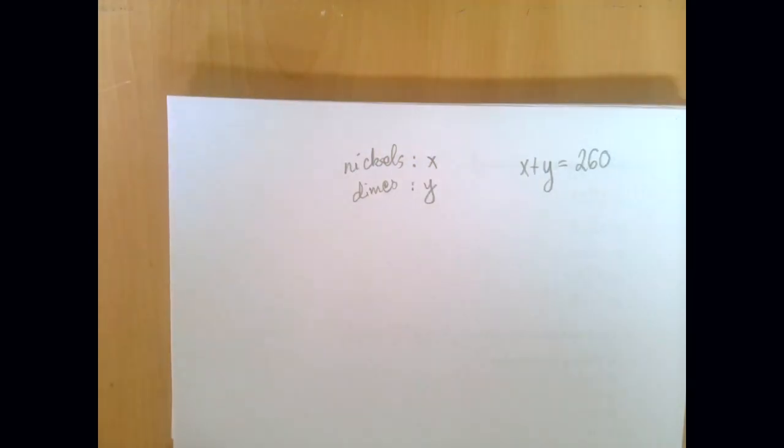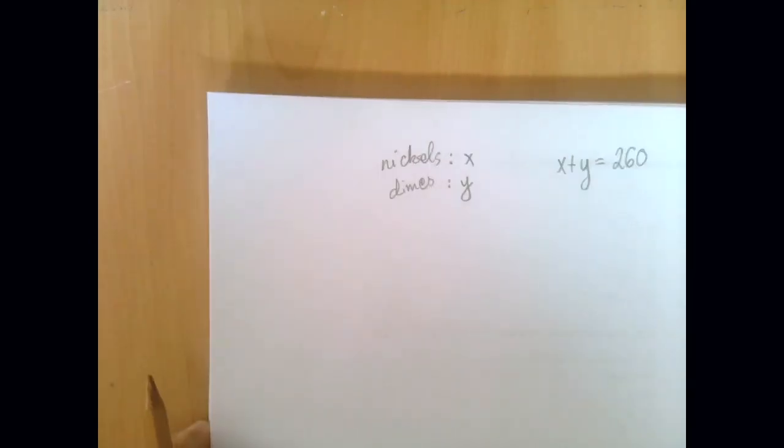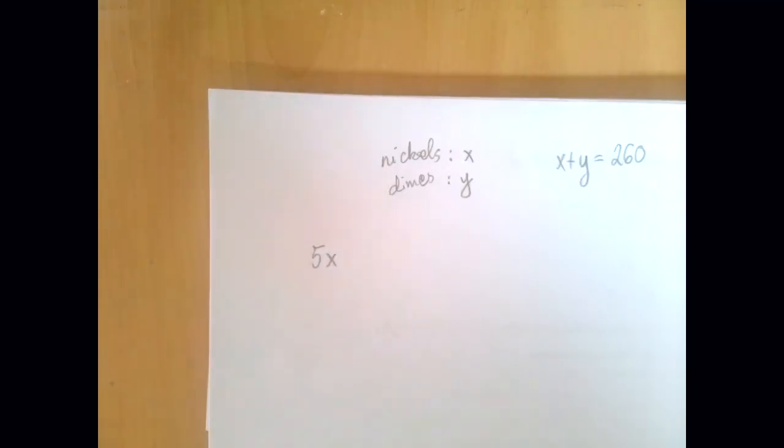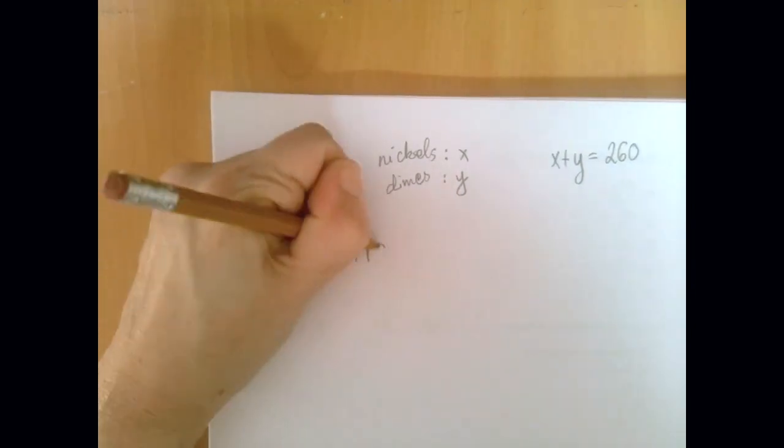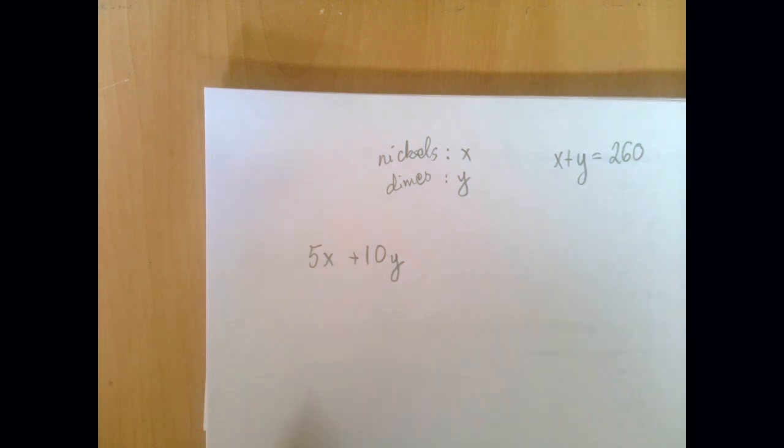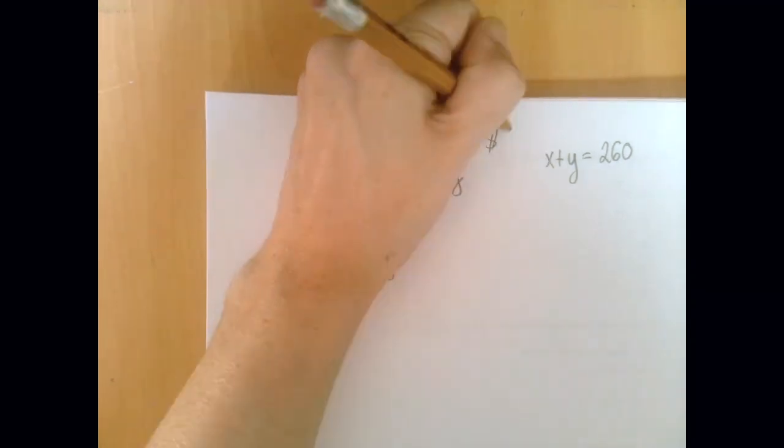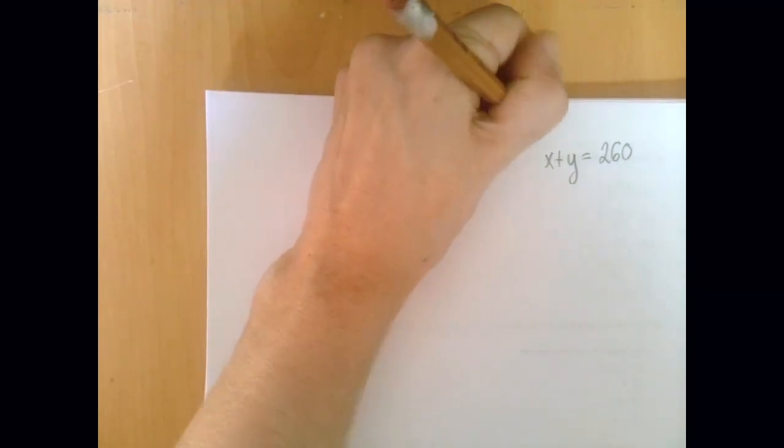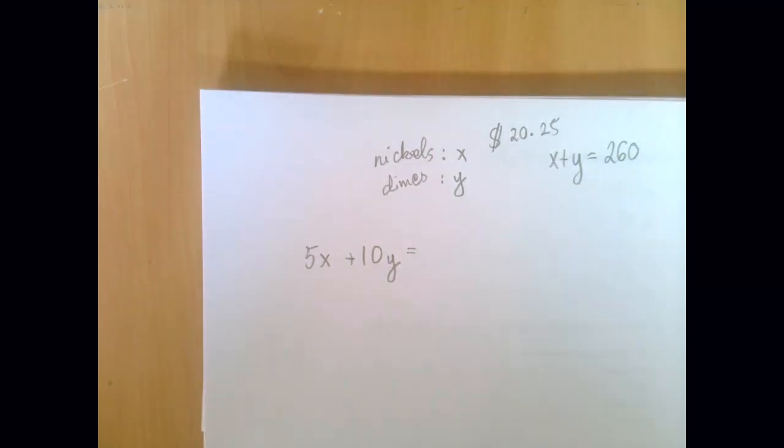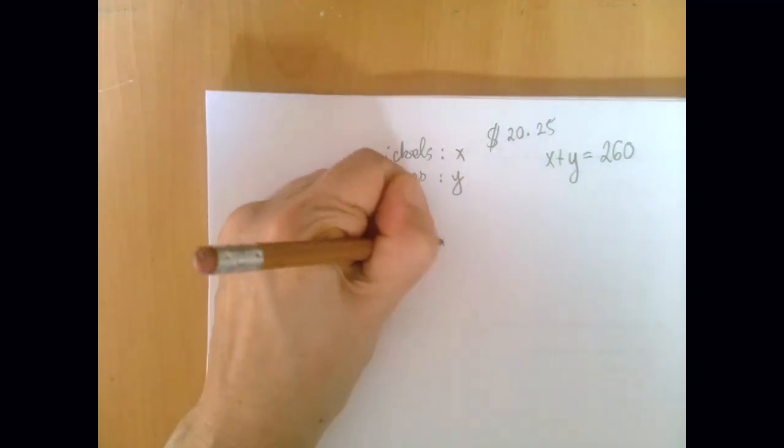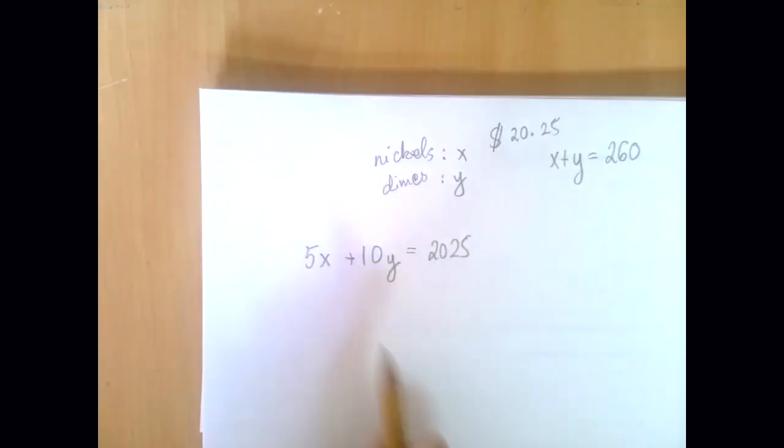So we have two options. Either let's think in pennies. Then we have, well, a nickel is worth 5 pennies and x many will be worth 5x pennies. And the same way, each dime is worth 10 cents. And now that the left-hand side is expressed in pennies, we have to express the total value, which was given to be $20.25 in pennies, which is 2,025 pennies. That is one option.